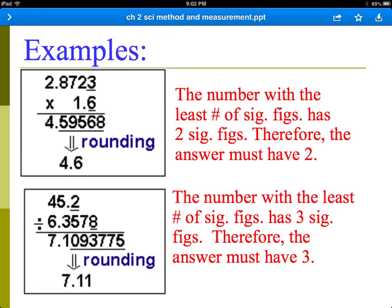In this first example, we have two numbers that we're going to multiply. This first number contains five significant figures. This number only contains two significant figures. So when we are done multiplying, we get this big long number, but we're going to have to round it so that in the end, it only contains two sig figs, one, two.